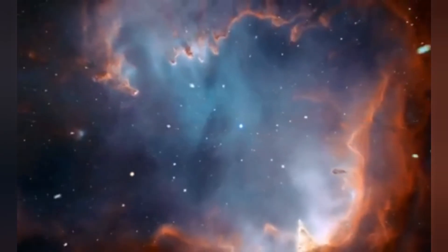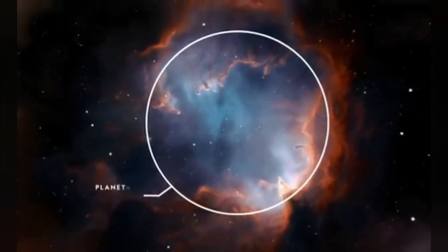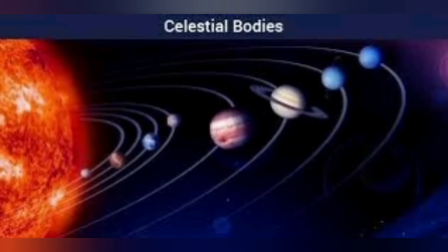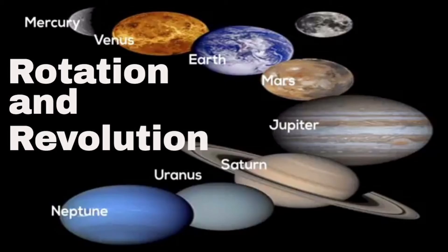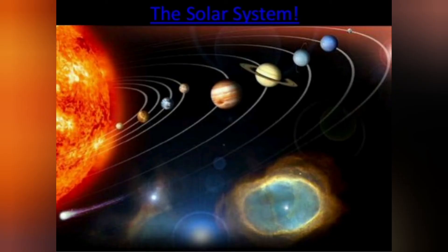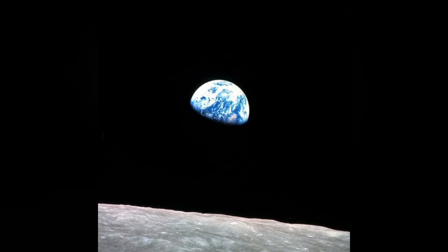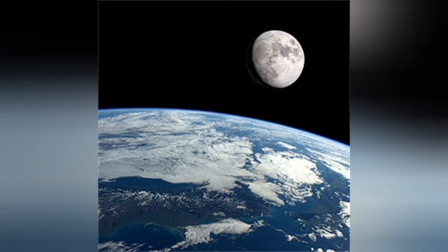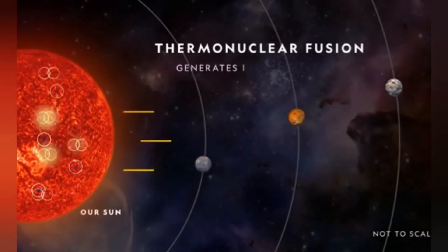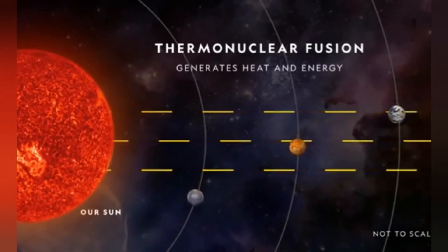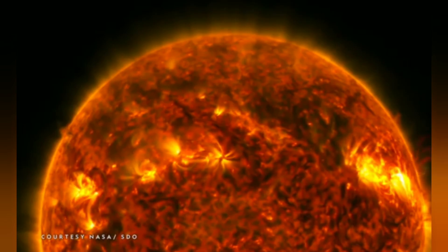Some celestial bodies do not have their own heat and light; they are lit by the light of stars. Such bodies are called planets. The word planet comes from the Greek word 'planetai', which means wanderers. The Earth on which we live is a planet — it gets all its light and heat from the sun, which is our nearest star. If we look at the Earth from a great distance, say the moon, it will appear to be shining just as the moon. The moon that we see in the sky is a satellite — it is a companion of our Earth and moves around it. Like our Earth, there are 8 other planets that get heat and light from the sun, and some of them have their moons too.